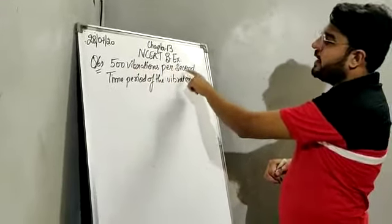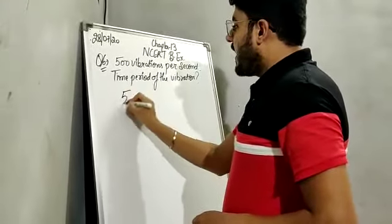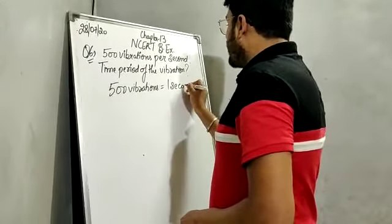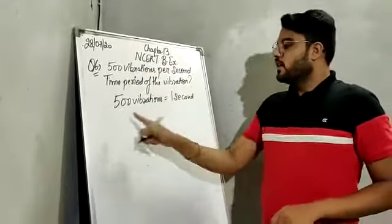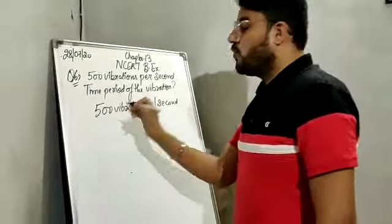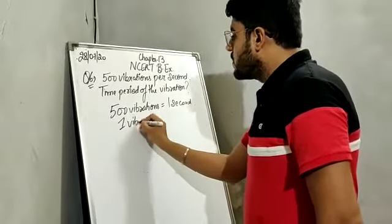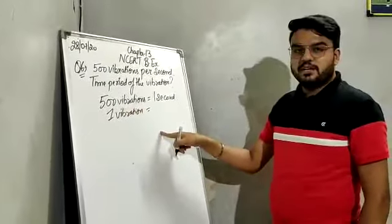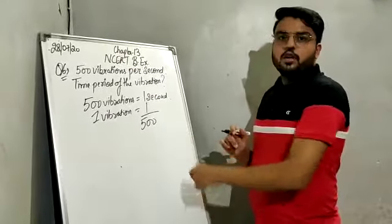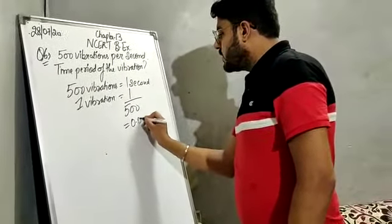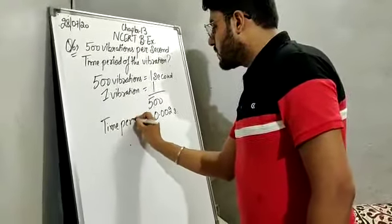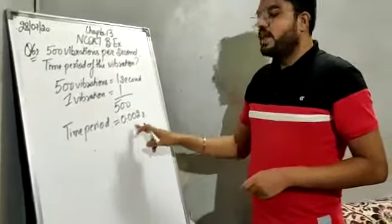It is given that 500 vibrations are done in 1 second. Since time period is the time taken to complete one oscillation, by the unitary method one vibration will be completed in 1 upon 500 seconds. When you divide 1 by 500, the answer comes out to be 0.002 seconds. So the time period is 0.002 seconds.